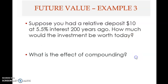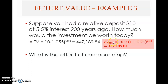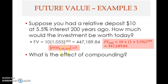The future value at the end of year 200 is: FV = 10 × (1 + 0.055)^200, which gives $447,189.84. You cannot use the time value table for this because the table does not give 5.5% interest — it gives 5% or 6%, not fractions. This is a weakness of the time value table.